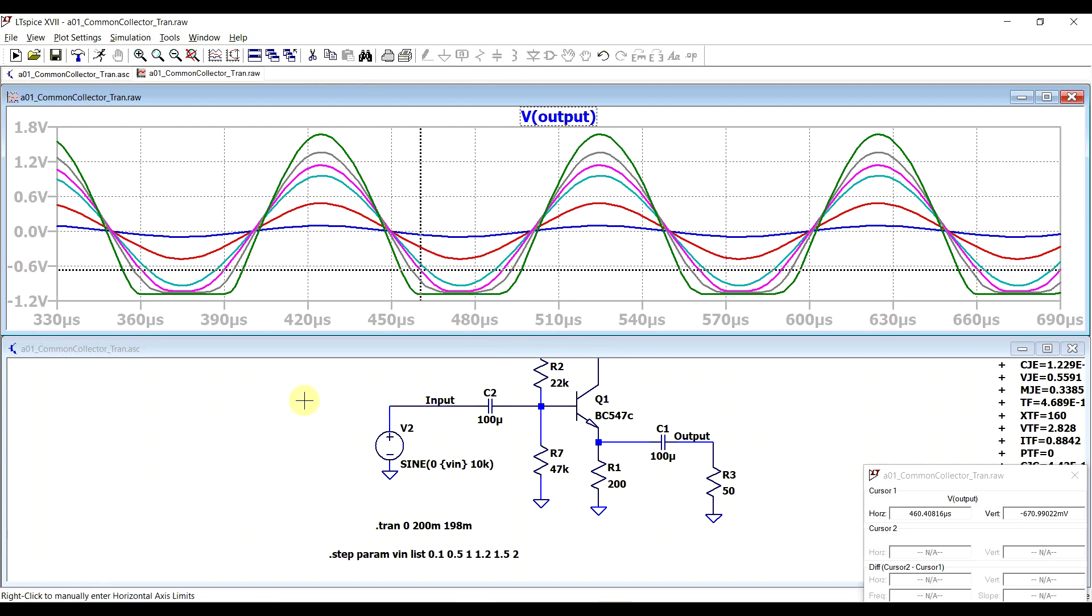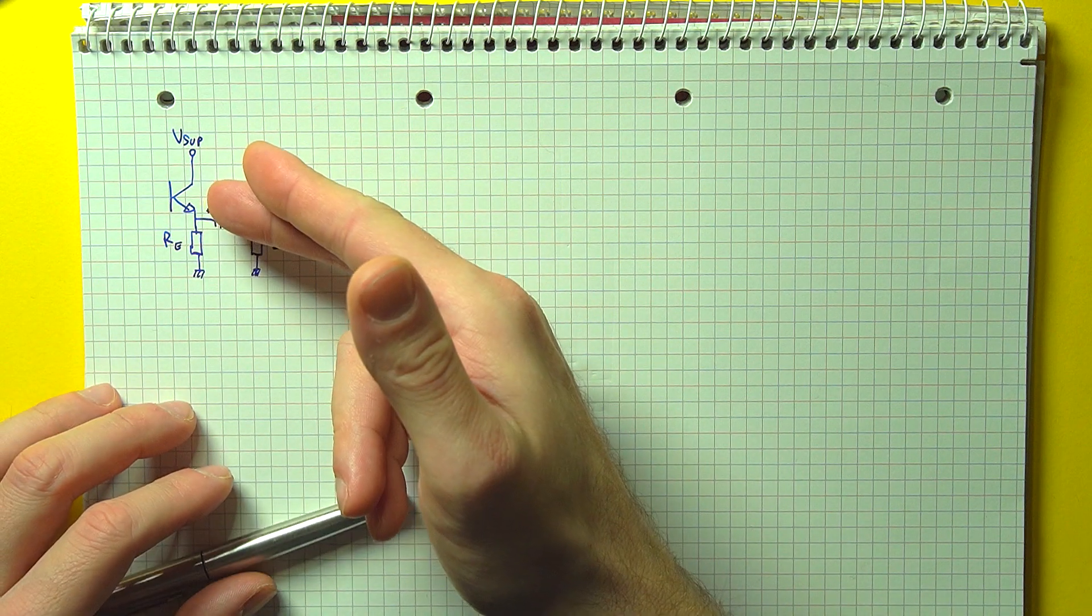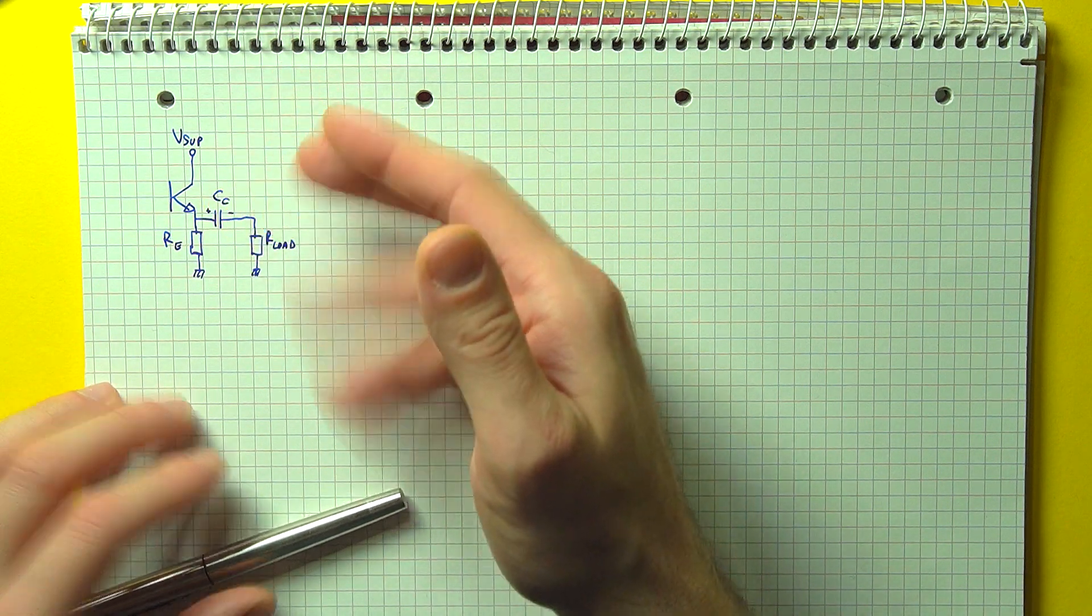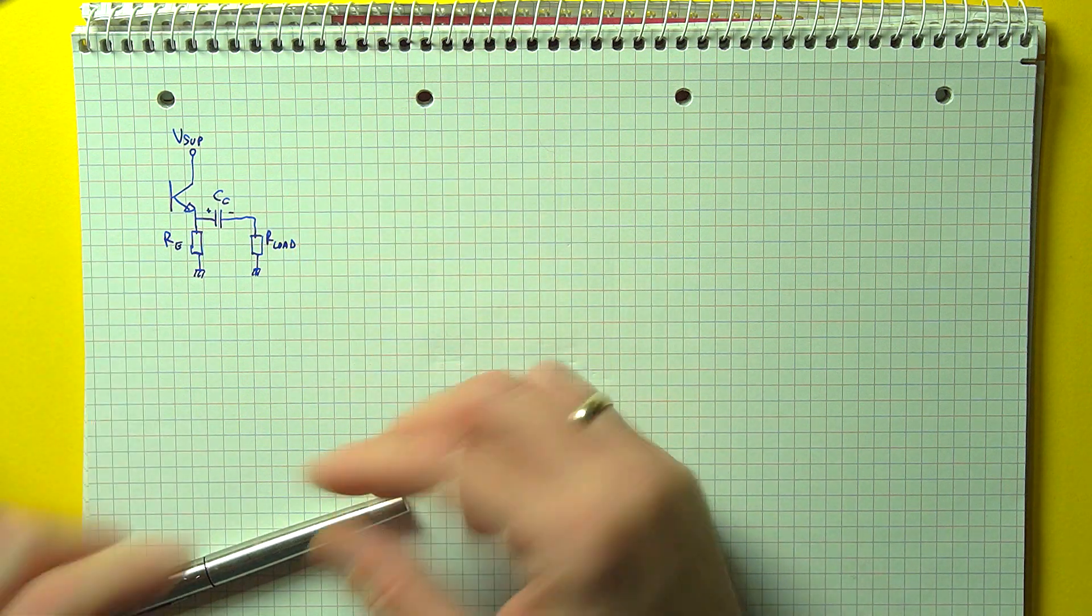Well, sort of. The problem that we are having is that although the transistor can pull the output voltage high close to the supply voltage, the only thing pulling it low is the emitter resistor.